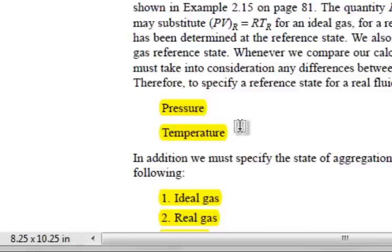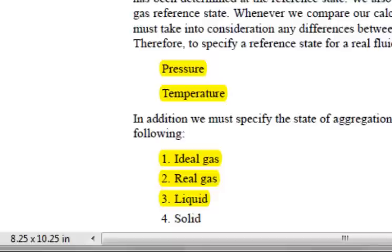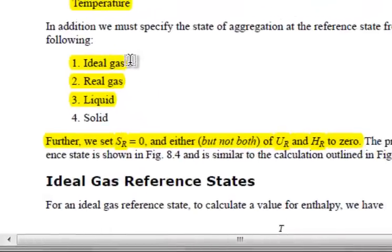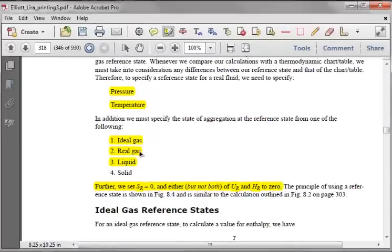A reference state involves a certain temperature and pressure, and also we need to specify the state of aggregation. For the purposes of fluids, we will either specify an ideal gas, a real gas, or a liquid. We will set entropy to zero in the reference state, and one of either internal energy or enthalpy.